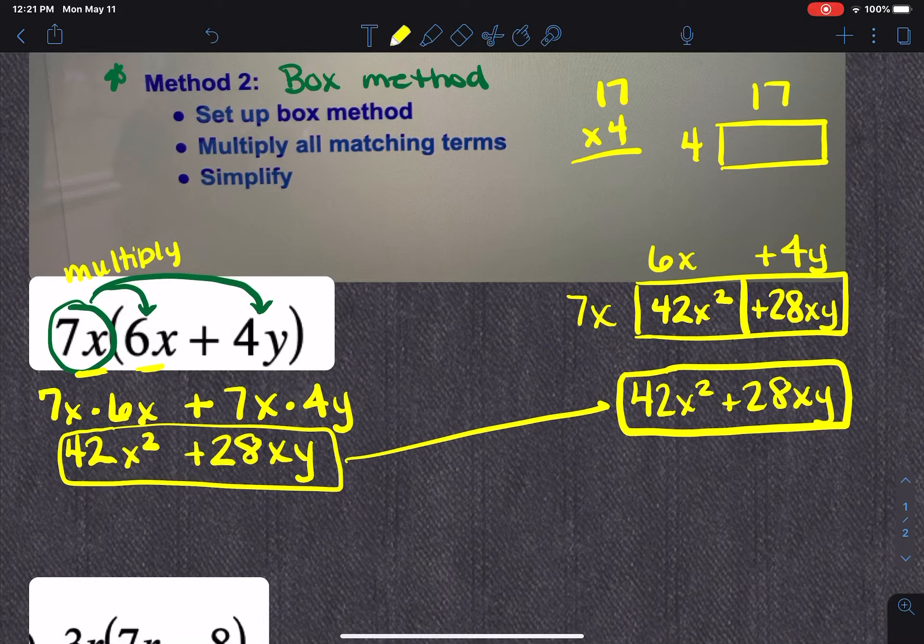Now, you'll notice you get the same answer either way. Now, I will tell you, just because I know where we're going in this section, the box method, I'm just telling you, is going to be so much easier. Because the box method, no matter how big this parenthesis might get, the box method is always going to keep kind of your stuff separated in their own little spots. And it's going to make it easier for you to put things together. So just to keep that in mind.